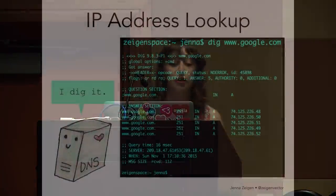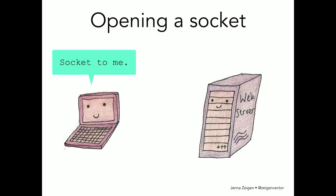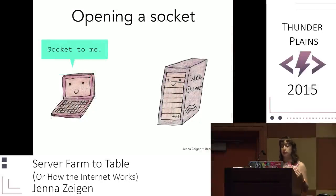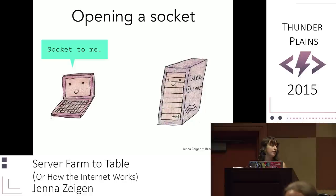Once the DNS server gets the answer from the authoritative name server, it sends it back to your computer, and then you can go on your merry way. If you want to check this out in your terminal, you can use the dig command — for example, dig www.google.com — and you can see the response. Now that you have the IP address, you can start to open a socket with the web server. Your computer takes that IP address and the given port number from the URL. For HTTP this defaults to port 80, and for HTTPS it defaults to port 443.